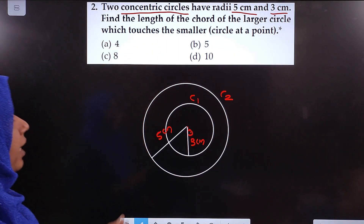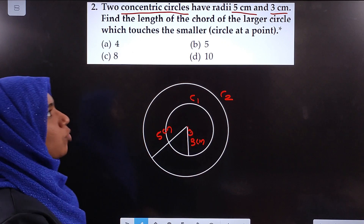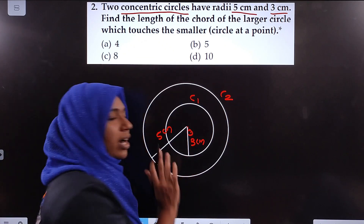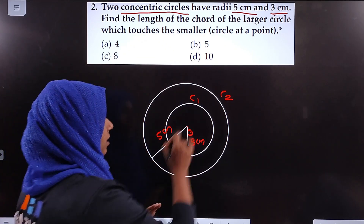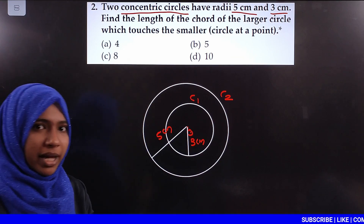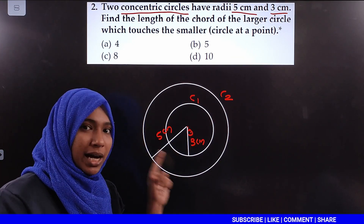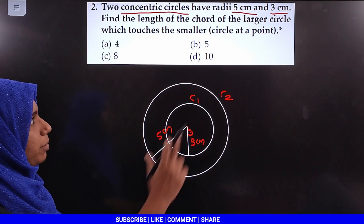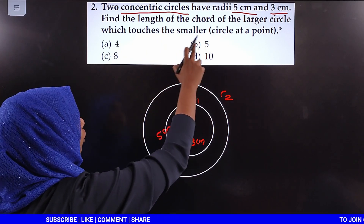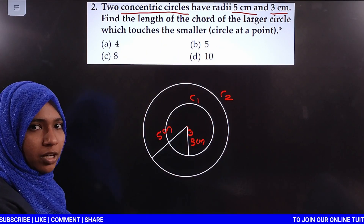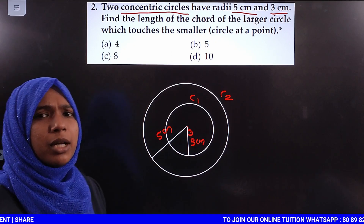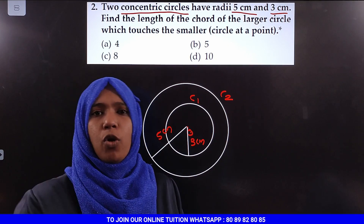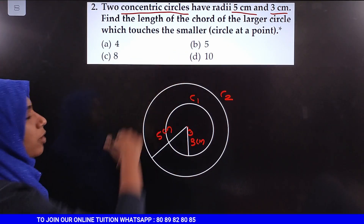Let's talk about the question: find the length of the chord of the larger circle that touches the smaller circle. The chord of the larger circle touches the smaller circle. The radii are 3 cm and 5 cm, marked in the figure. We look at the chord of the larger circle and how it touches the smaller circle.